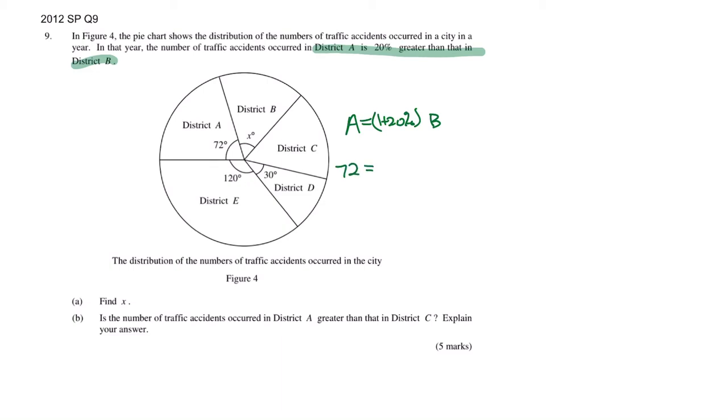1 plus 20% is 1.2, so we have 72 equals 1.2 times x. Remember, the first question is find x. 1.2 is multiplying with x, and if you want to get rid of it, just divide it on the other side. So it becomes 72 over 1.2, which is 60.